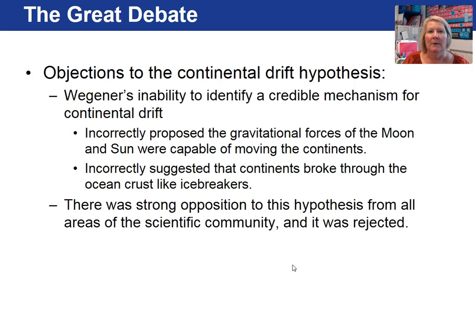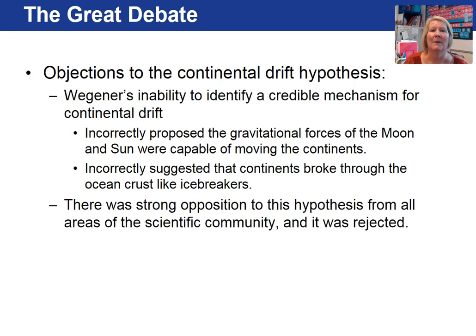So why did not very many people believe Wegener's idea on continental drift? The answer is that he didn't have a mechanism for drift — he couldn't explain how it was happening. He had a couple of incorrect ideas, such as gravity caused it, or the continents simply drove through the ocean crust like an icebreaker. As a result, he was not taken seriously, there was strong opposition to the hypothesis, and he ended up dying in 1935 without his hypothesis being accepted.